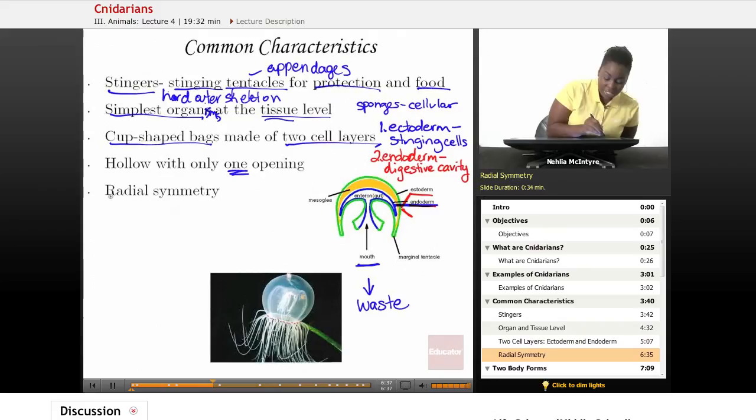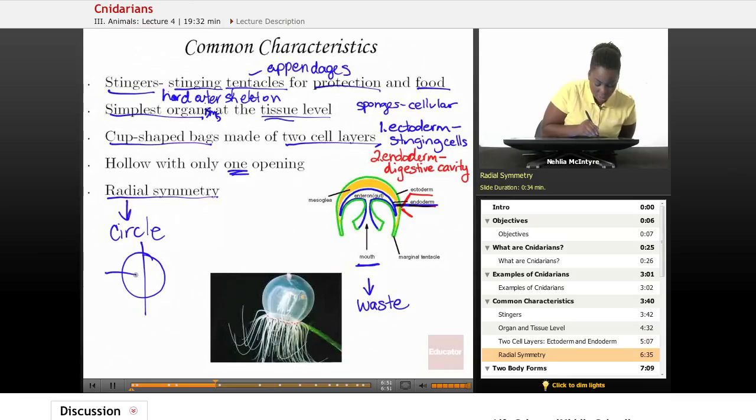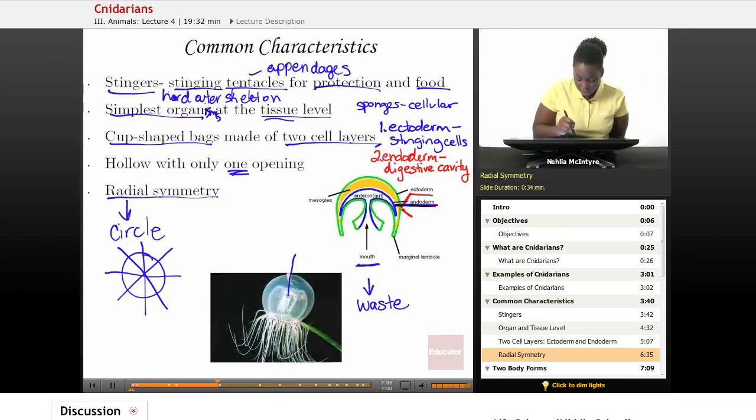Finally, all Cnidarians share what we call radial symmetry, and that means that their body arrangement is based upon a circle. So if you were to cut a Cnidarian in equal parts, it would be cut so that wherever you cut it on the circle, you could make equal parts around it. That's just like you could see here in this jellyfish. If you were to do the same thing, you could see that radial symmetry.